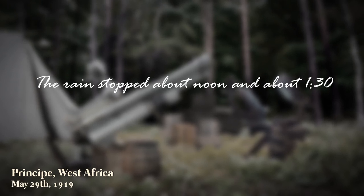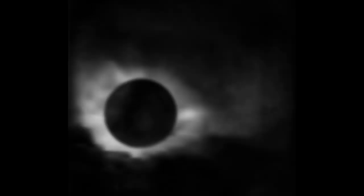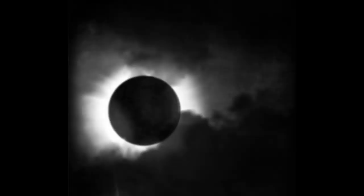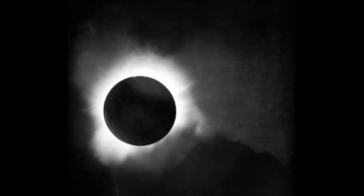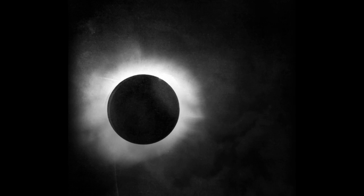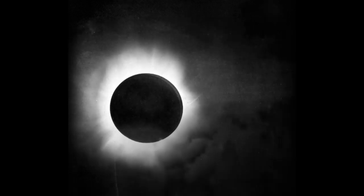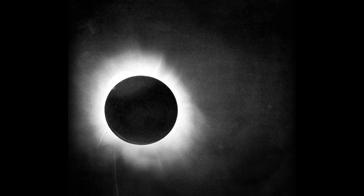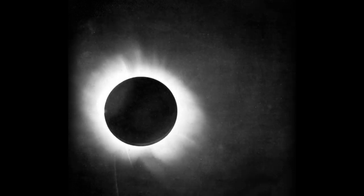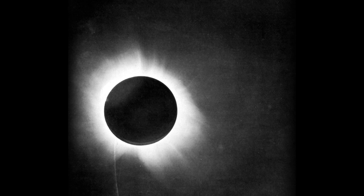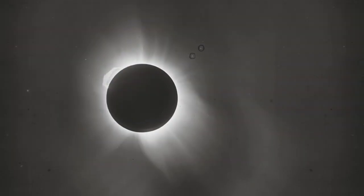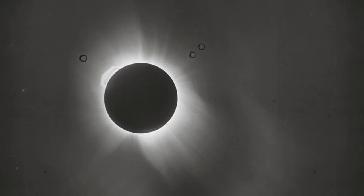Eddington writes: "We had to carry out our photographs in faith. I did not see the eclipse, being too busy changing plates, except for one glance to make sure it had begun, and another halfway through to see how much cloud there was. We took 16 photographs. They are all good of the sun, showing a very remarkable prominence. But the cloud has interfered with the star images. The last few photographs show a few images which I hope will give us what we need." After years in the making, the photographs were finally taken. The theory's fate was at hand.